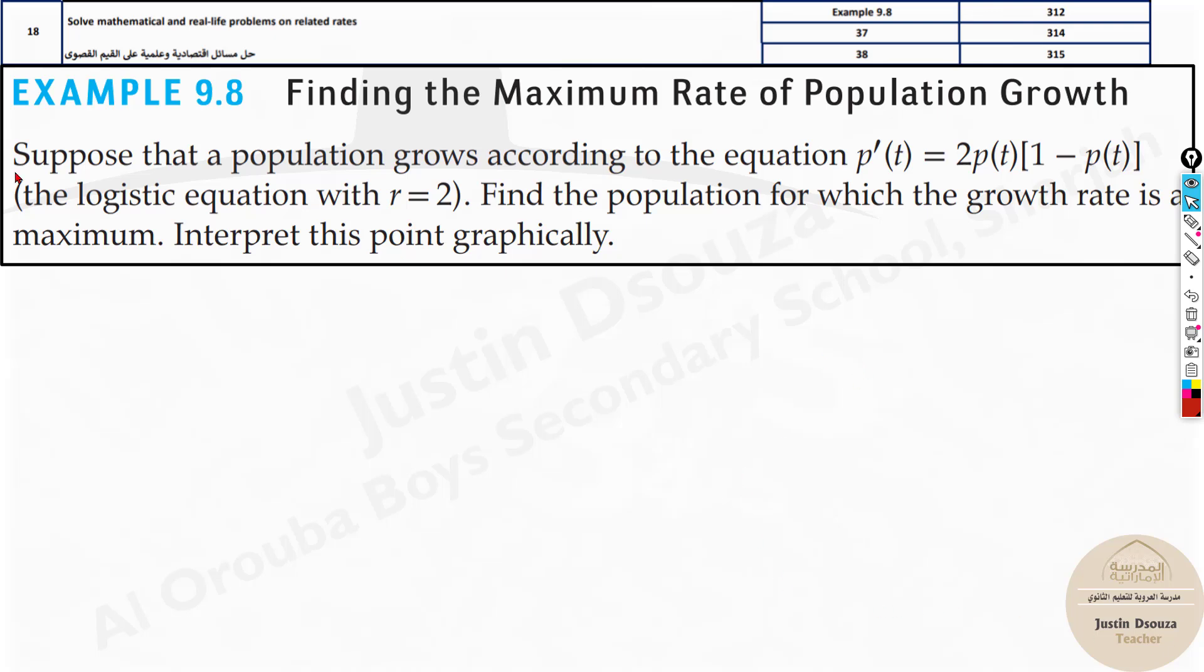Here they have given us the population grows according to the equation p'(t) equals 2 times p(t)(1 minus p(t)). This is the logistic growth equation, but here it should be r, but the r value is already given to be 2, so we substitute 2 over here.